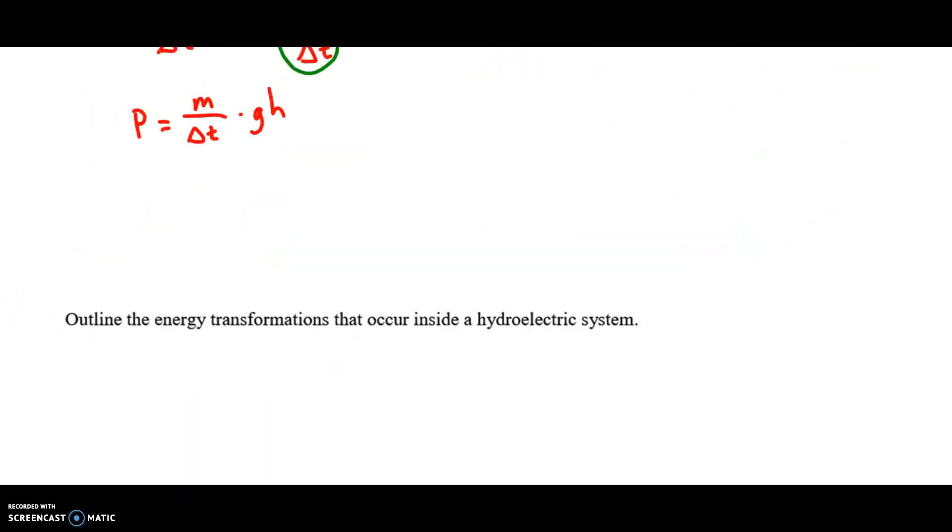And we call this, m over delta T, the mass flow rate. And we've actually seen this already. We looked at mass flow rate in these problems. And we did the exact same thing. We separated off the m over delta T.